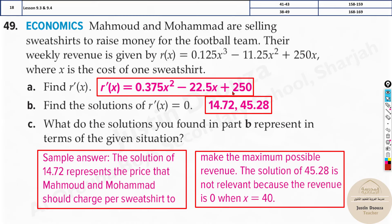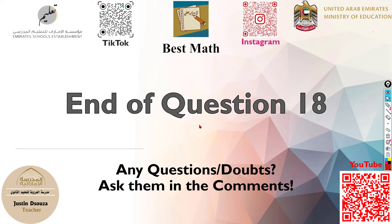Since the revenue becomes zero or negative beyond x = 40, the solution x = 45.28 is not practically relevant. The value x = 14.72 represents the price — approximately $14.72 per sweatshirt — that maximizes revenue. That's the end of this question. If you have any doubts, post them in the comments, and I'll see you in the next video.